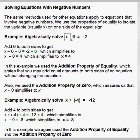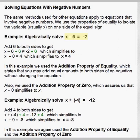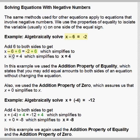In our first example, we have the equation x minus 6 equals negative 2. Our objective is to get x all by itself, and we can do that by adding 6 to both sides. We add 6 to the left side and we add 6 to the right side. We added 6 to the left side because the minus 6 added to 6 gives us 0.